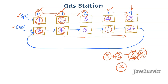Now we are at index 2. We need 5 units of gas to move from here to here. We have only 3 units available but 2 more units in balance. With this we can easily move from index 2 to index 3. We have completed our trip — this is where we started and we have reached our starting position. This index is the expected answer, so simply return it.